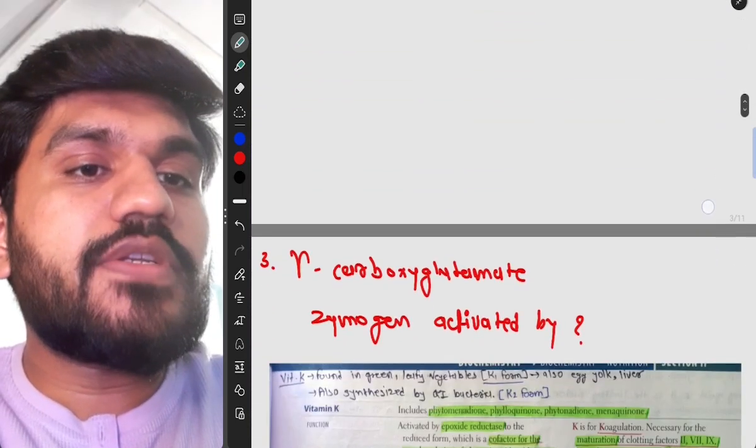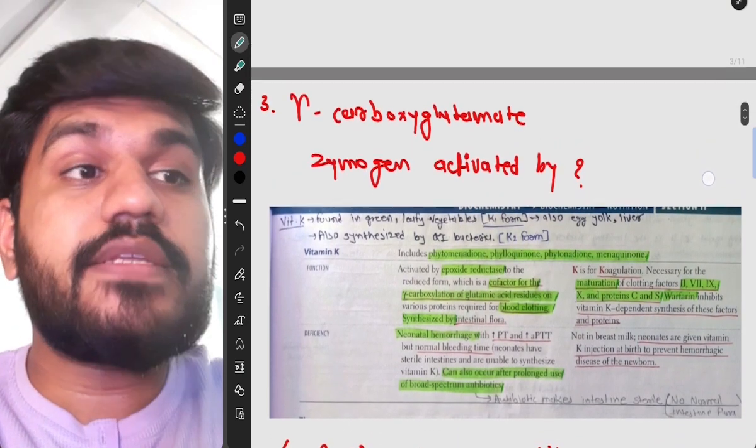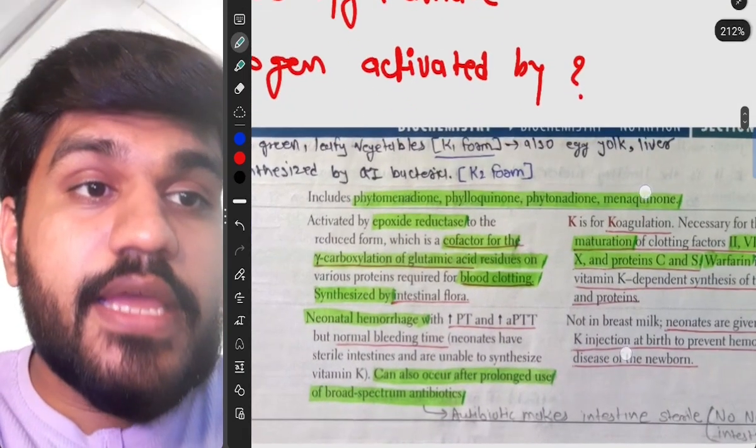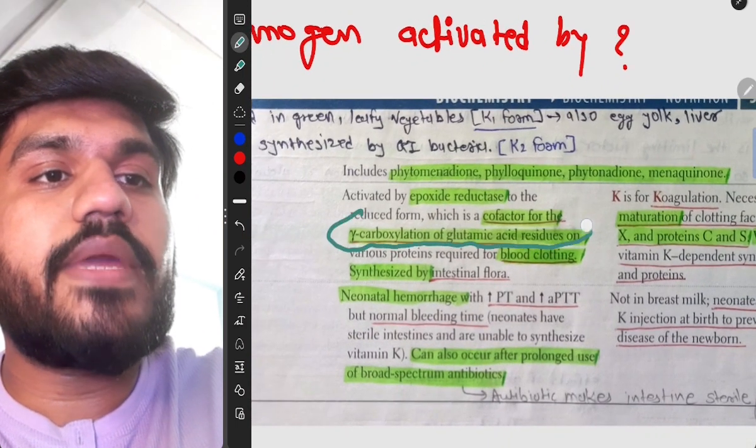So this is really important graph and this was a very smart question too. Now we are going to move on to third question. Third question is gamma carboxy glutamate zymogen activated by, and the simple answer is vitamin K.